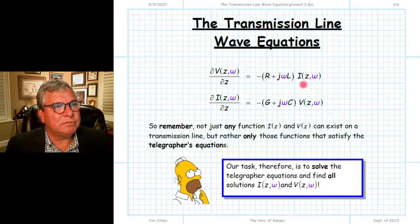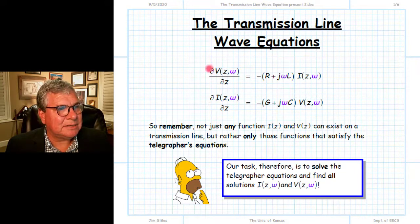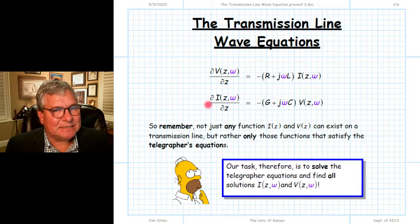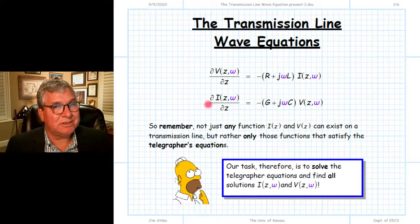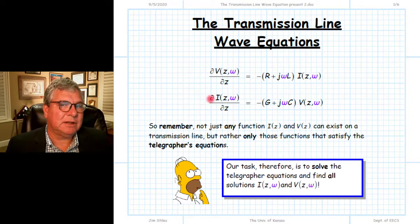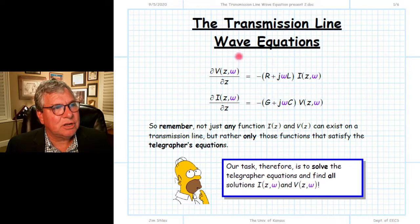Only functions of current and voltage — in other words, the current and voltage along the transmission line — that simultaneously satisfy both of these equations can exist physically on the transmission line. So the question is: what are those functions? What can exist physically on a transmission line? Our task then is to try to solve these differential equations so we can determine explicitly the functions V and I with respect to position Z.